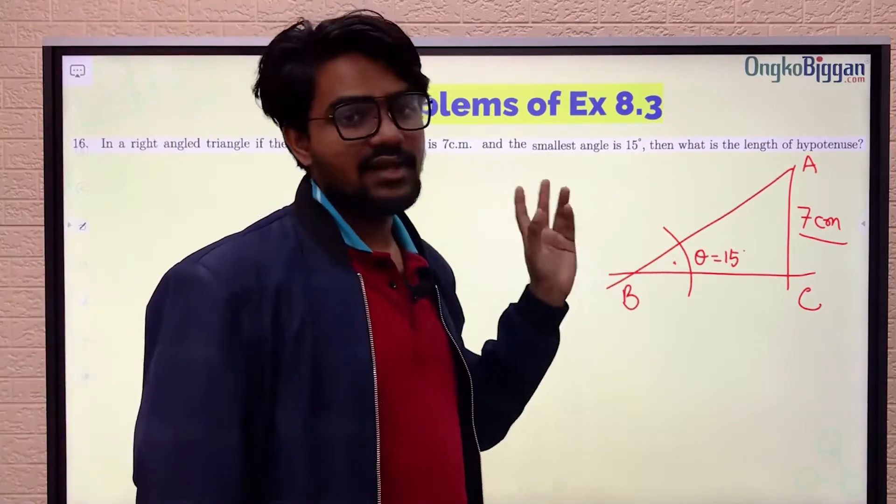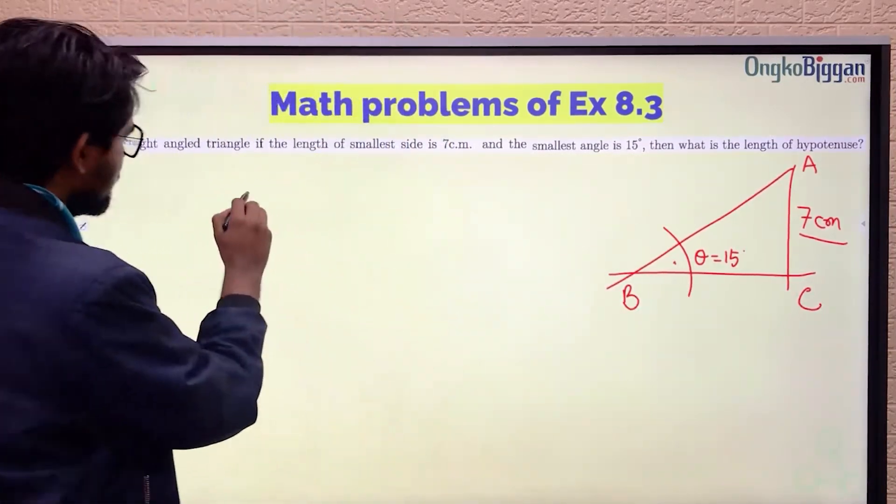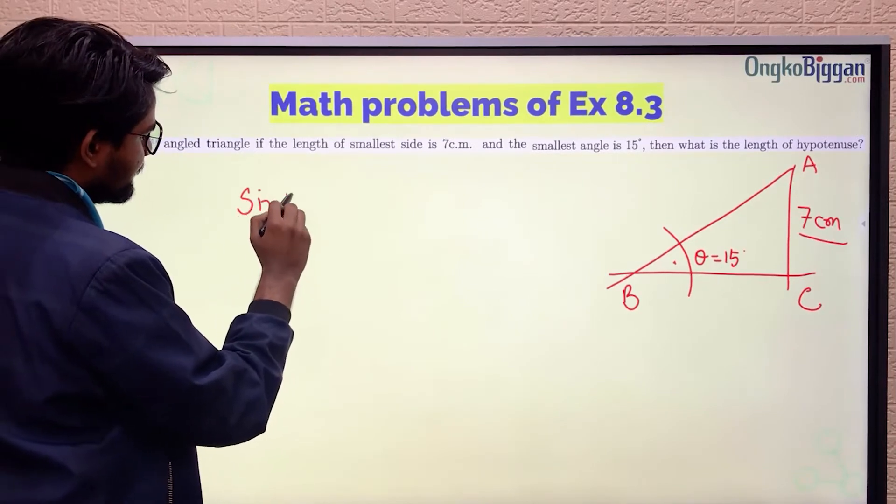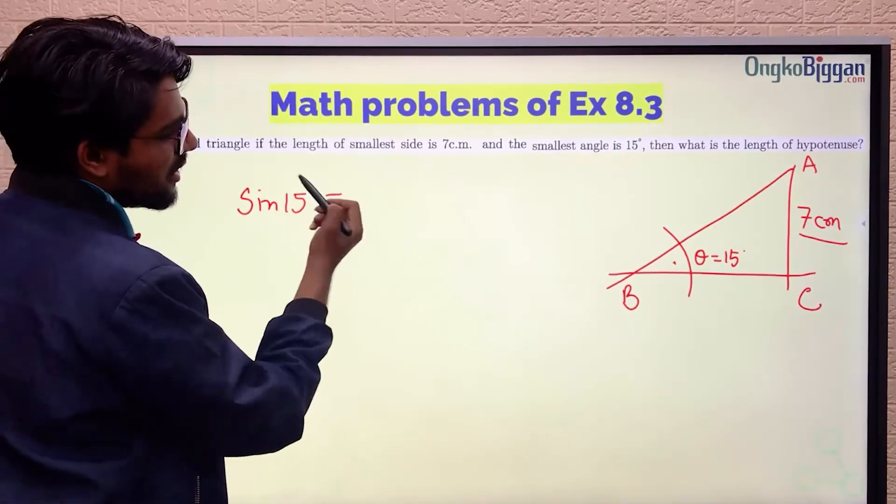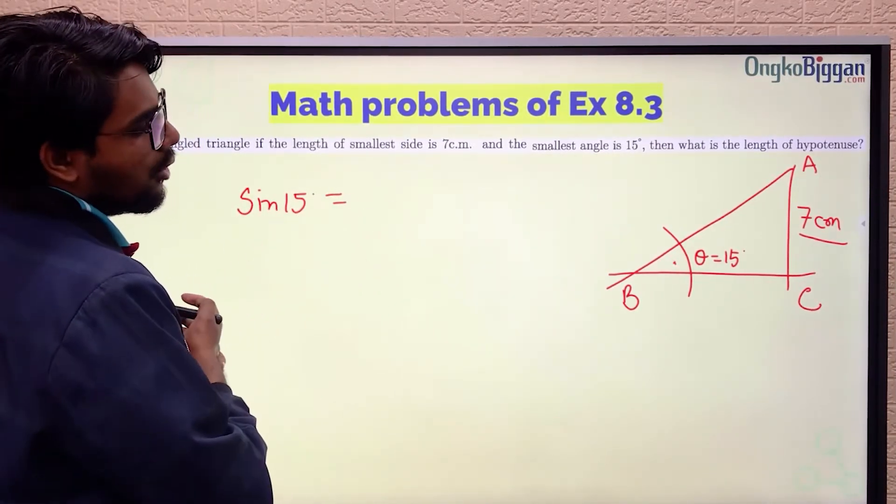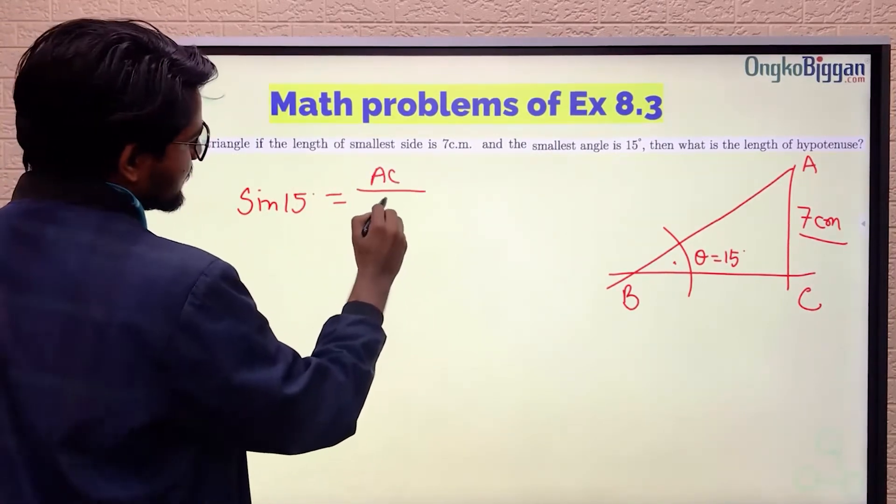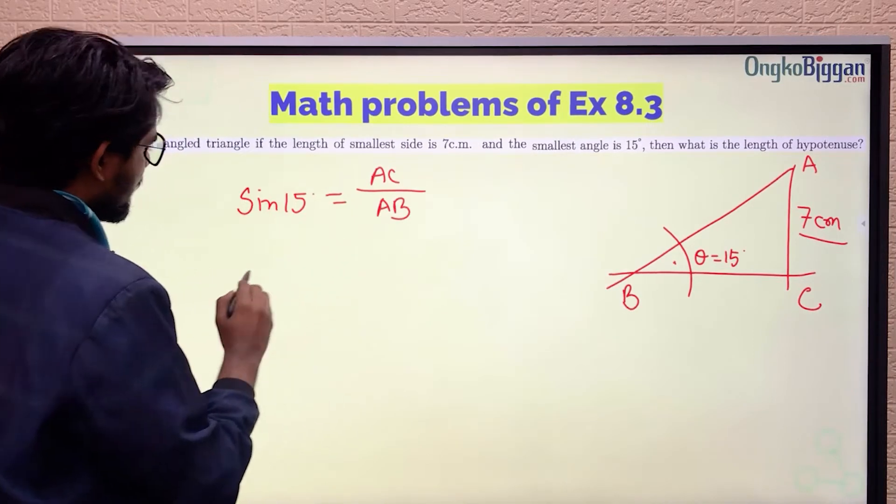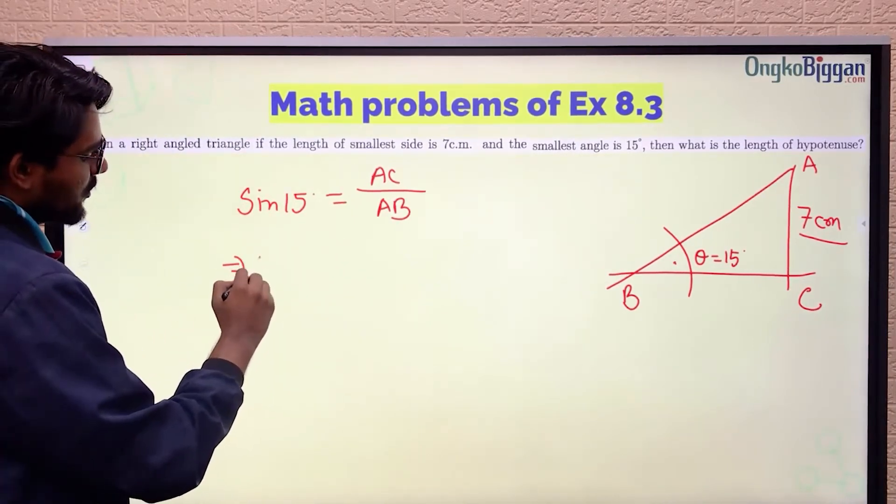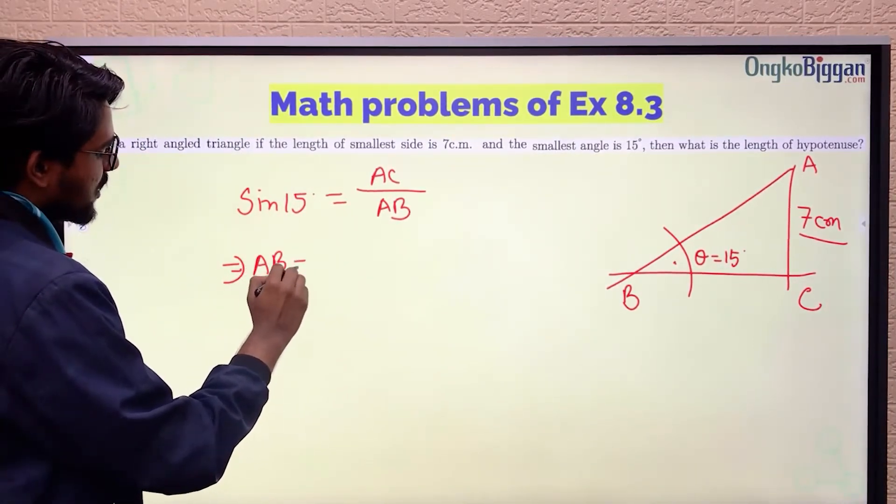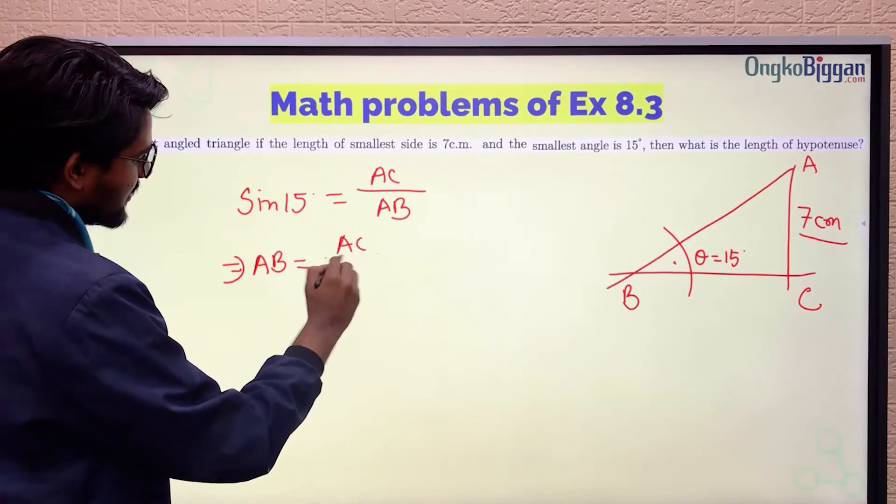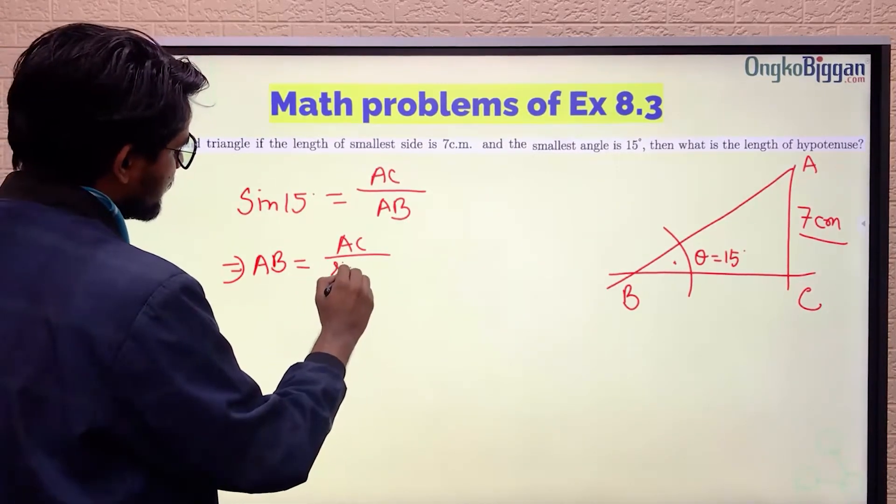We can directly find the value of AB using the ratio of sides. That is, sin 15° equals the opposite by hypotenuse. The opposite is AC and the hypotenuse is AB. So if you want to find the hypotenuse AB, you can write AB equals AC divided by sin 15°.